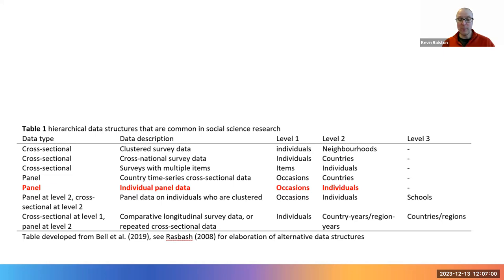This is longitudinal panel data, where the structure is that of individuals measured at different occasions or time points. This is the data structure of the type provided by datasets like the British Household Panel Survey or the Understanding Society datasets. For the examples we provide, the outcome variables are linear metrics. Much of what follows generalises to non-linear outcomes, but researchers should be aware that there is additional complexity to be considered in modelling non-linear outcome variables in fixed effect or random effect frameworks.